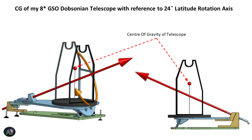Here I have marked the center of gravity of my telescope using a small red dot. You can see how it is deviated from the rotation axis. Having the center of gravity on the axis is preferable because then you can drive the whole equatorial platform with a very low capacity motor, which is crucial if you are using a friction drive.